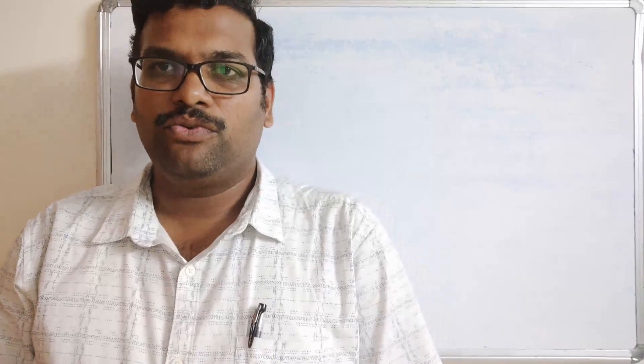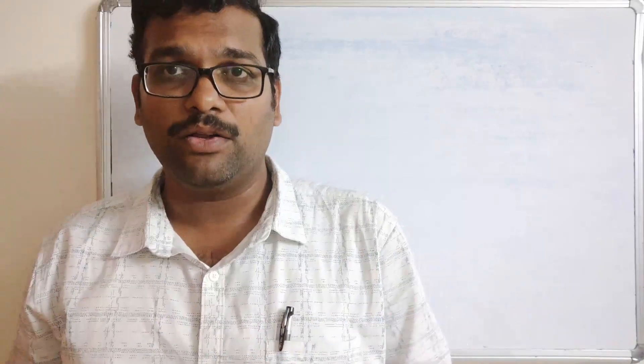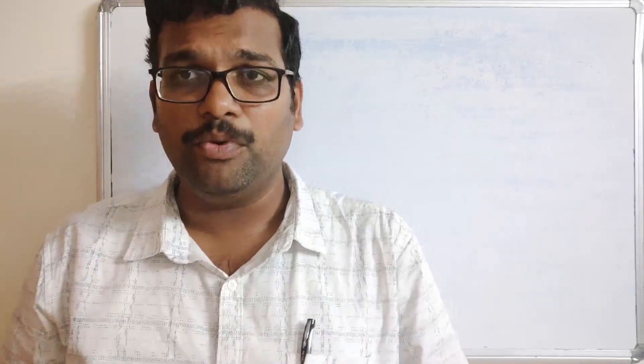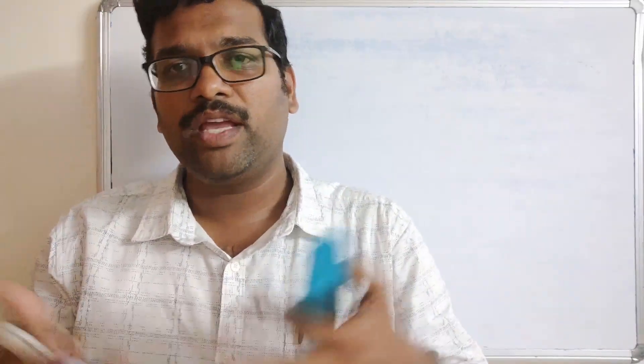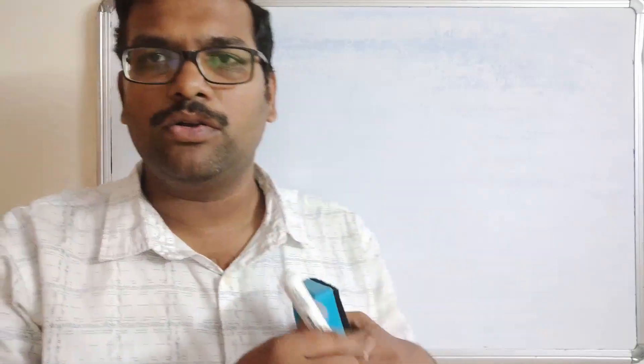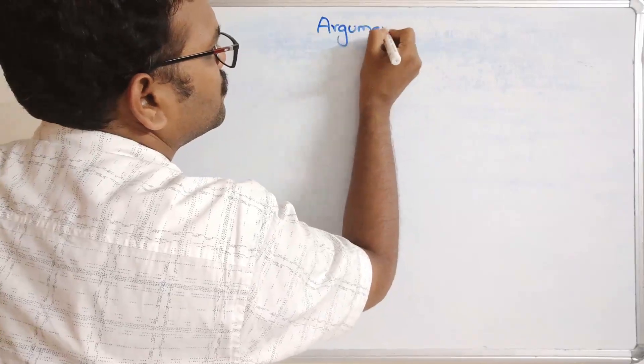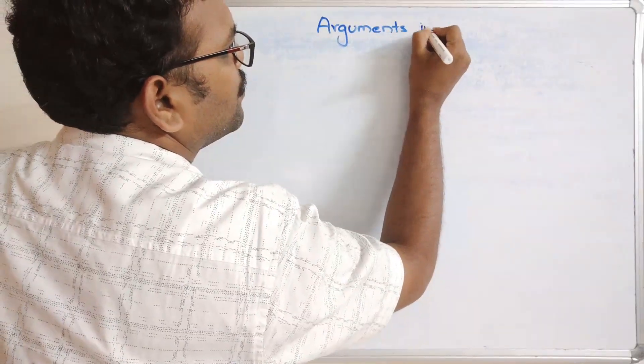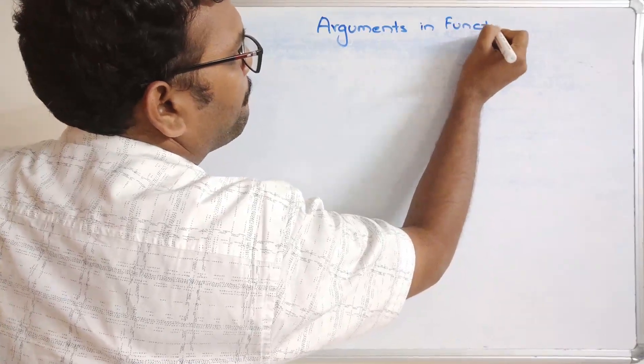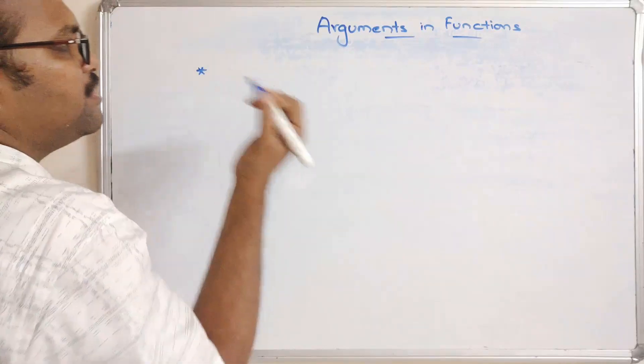Hello friends, welcome back to our channel. Today we'll see one more concept in programming: how many ways we can pass arguments from a function call to a function definition. In our previous session we discussed function calls and function definitions. Today we'll see the different ways to pass arguments, and there are three categories.